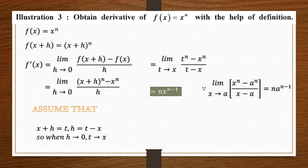This means we can substitute any value for n and apply the formula directly. For example, for x⁵ the derivative is 5x⁴, and for x⁶ the derivative is 6x⁵. This kind of question can be solved using this direct result.